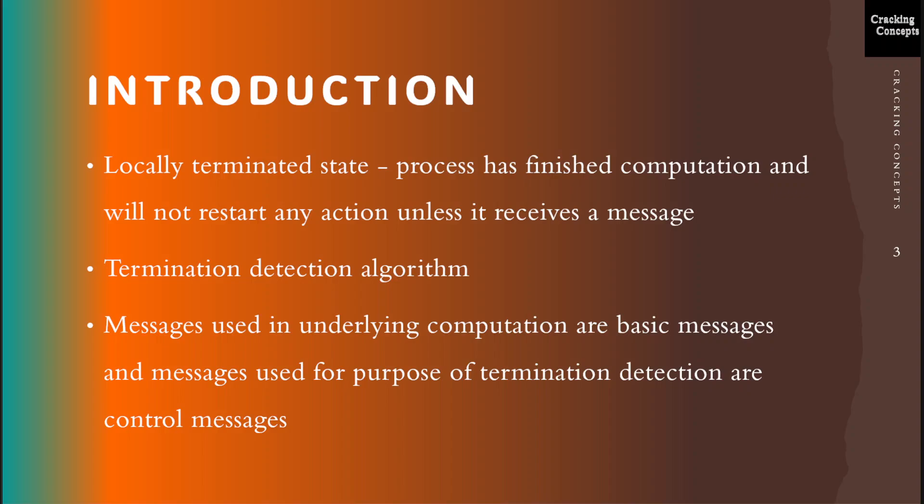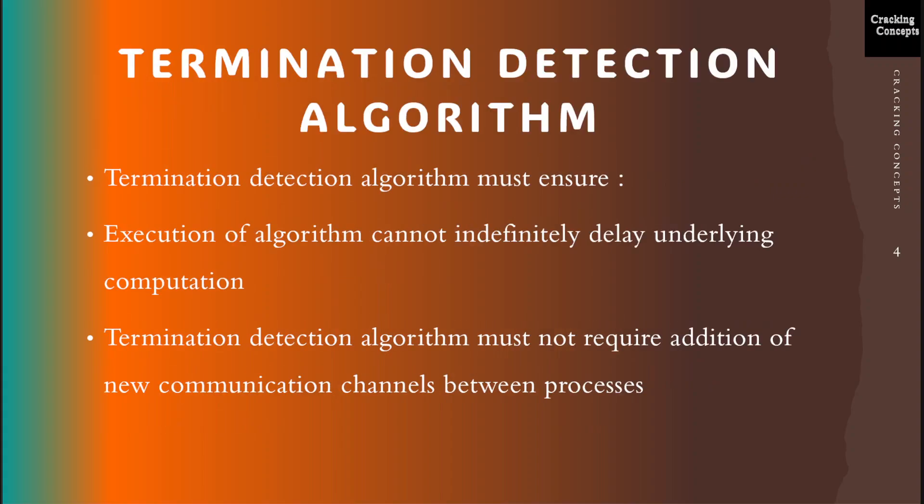Messages used in the underlying computation are called basic messages, and messages used for the purpose of termination detection are called control messages. A termination detection algorithm must ensure the following: first, that the execution of a termination detection algorithm cannot indefinitely delay the underlying computation; and second, the termination detection algorithm must not require addition of new communication channels between processes.